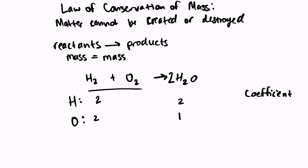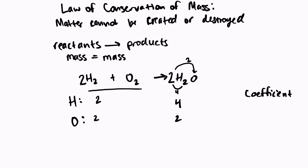The coefficient multiplies into everything in the formula. So not only do I have two oxygens, but I also now have four hydrogens on this side. So I'm going to change this number to a four, because two times two is four. The coefficient multiplies into everything in that formula, which means I need to come back and look at the left-hand side and fix the number of hydrogens. I'm going to put a coefficient of two in front of my hydrogen.